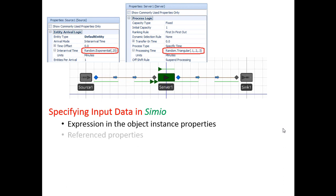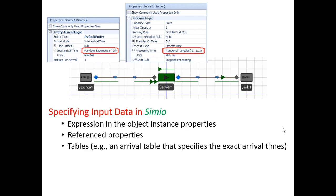There are other ways of specifying input data in Simeo. For instance, we can use reference properties, where you define the expression in the reference property and then refer to it from the object instance. Another way is by using tables. For example, you may have an arrival table that specifies exactly what time entities are created in your model, used when you want to replicate a particular situation from the real system. There are also sequence tables that can specify both the sequence parts go through and the processing times at each step.